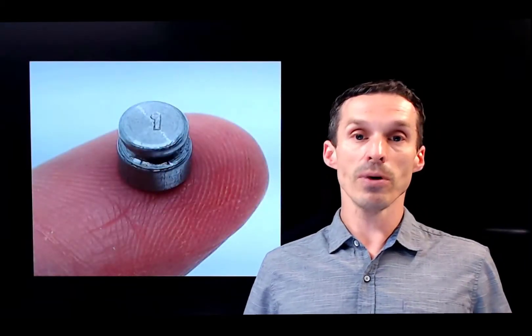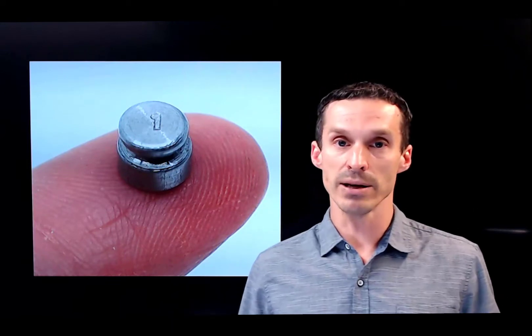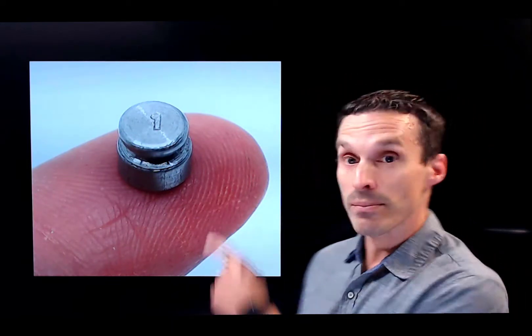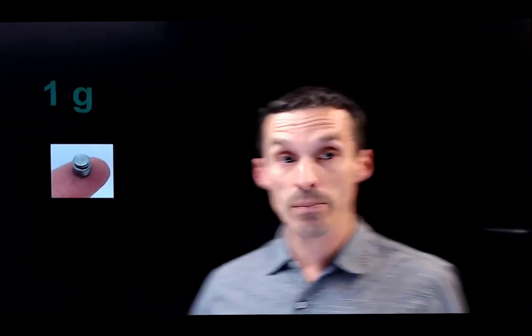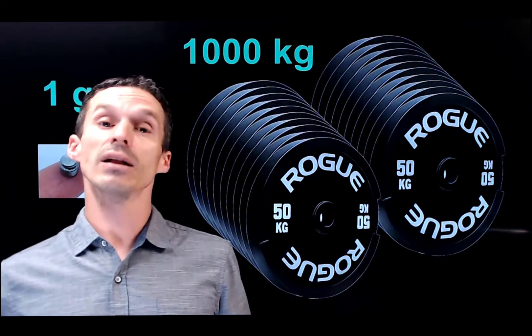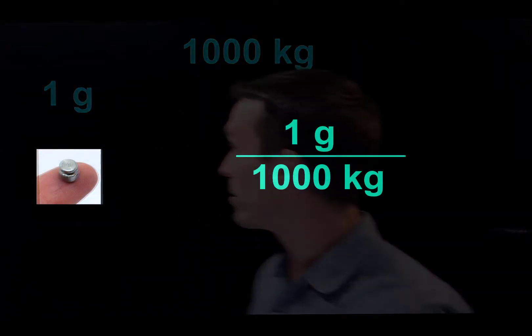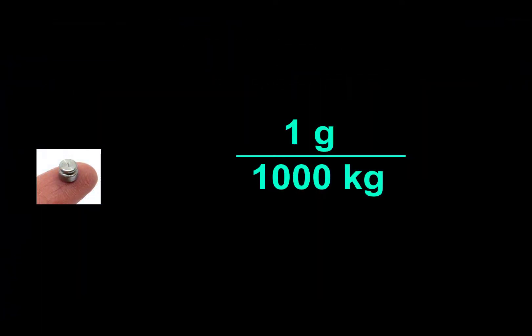All right, so back to chemistry for a moment. When we're talking parts per million, we're usually doing this on a mass-by-mass basis. So let's say we have one gram, a tiny little weight, and you compare that to this weight. About a thousand kilograms. A thousand kilograms is one million grams. So there's the ratio. One in a million, once again.